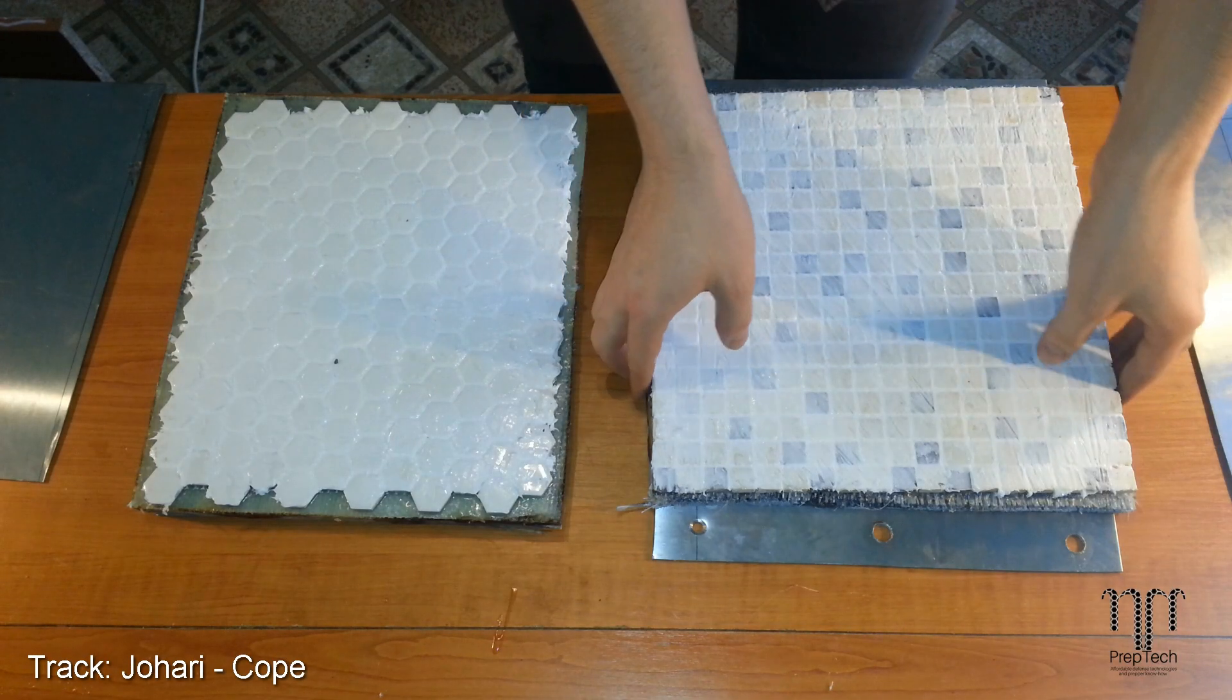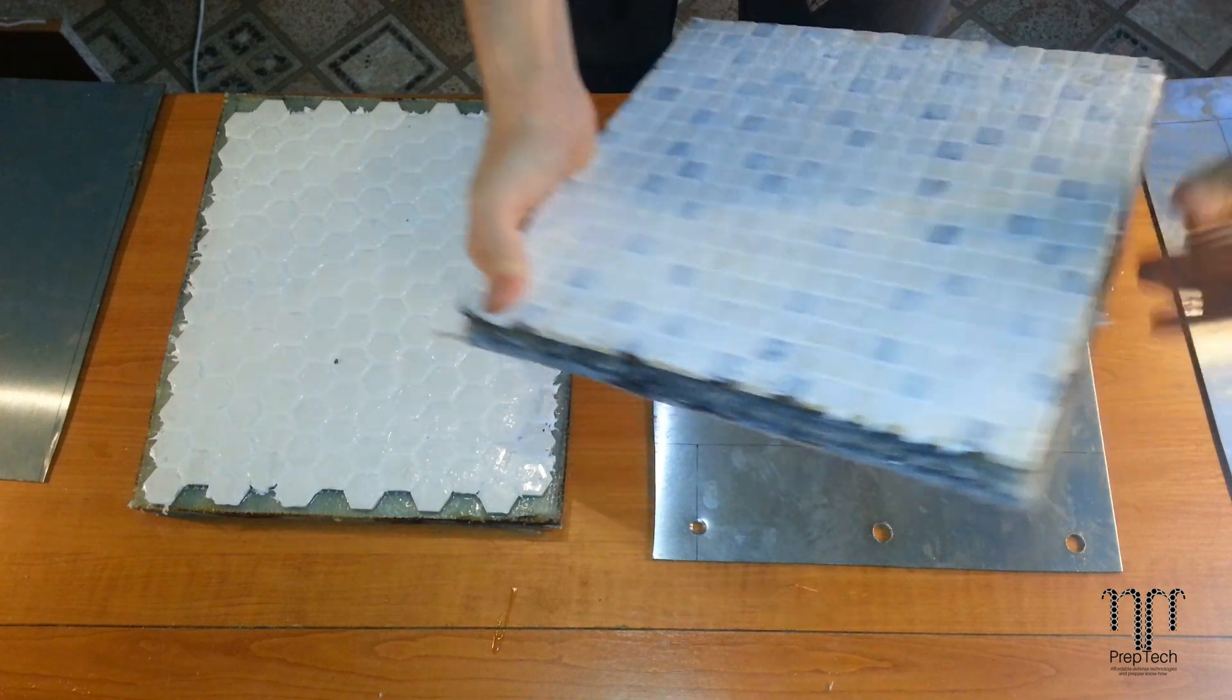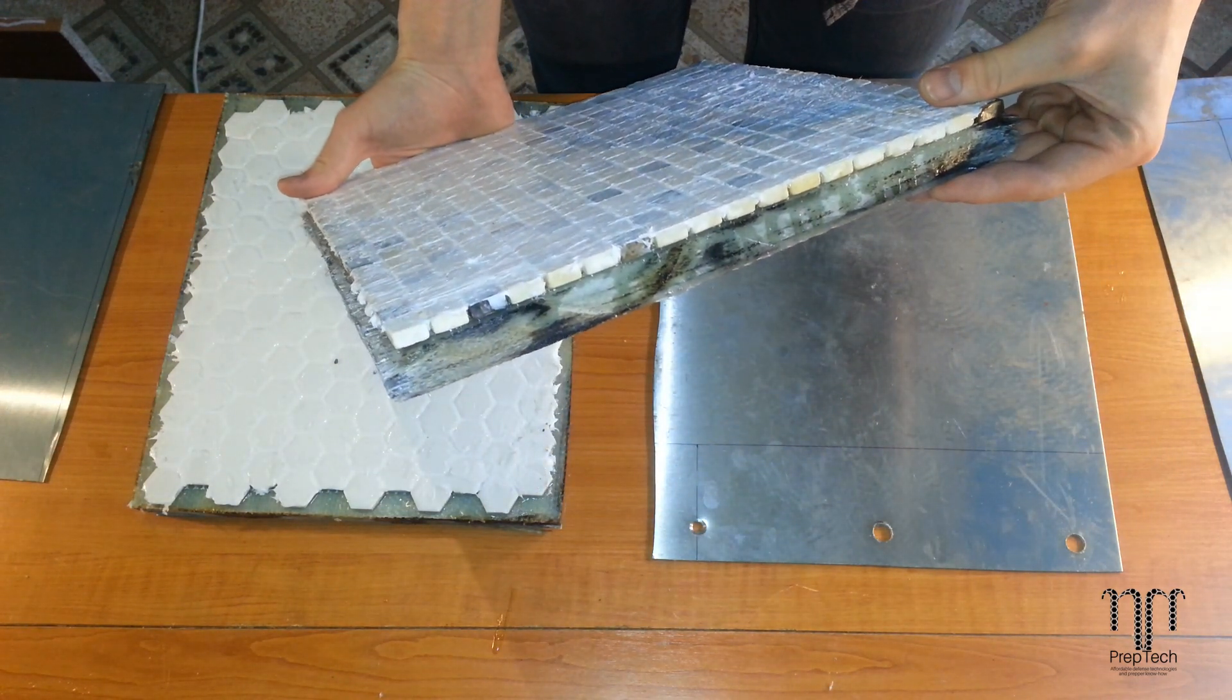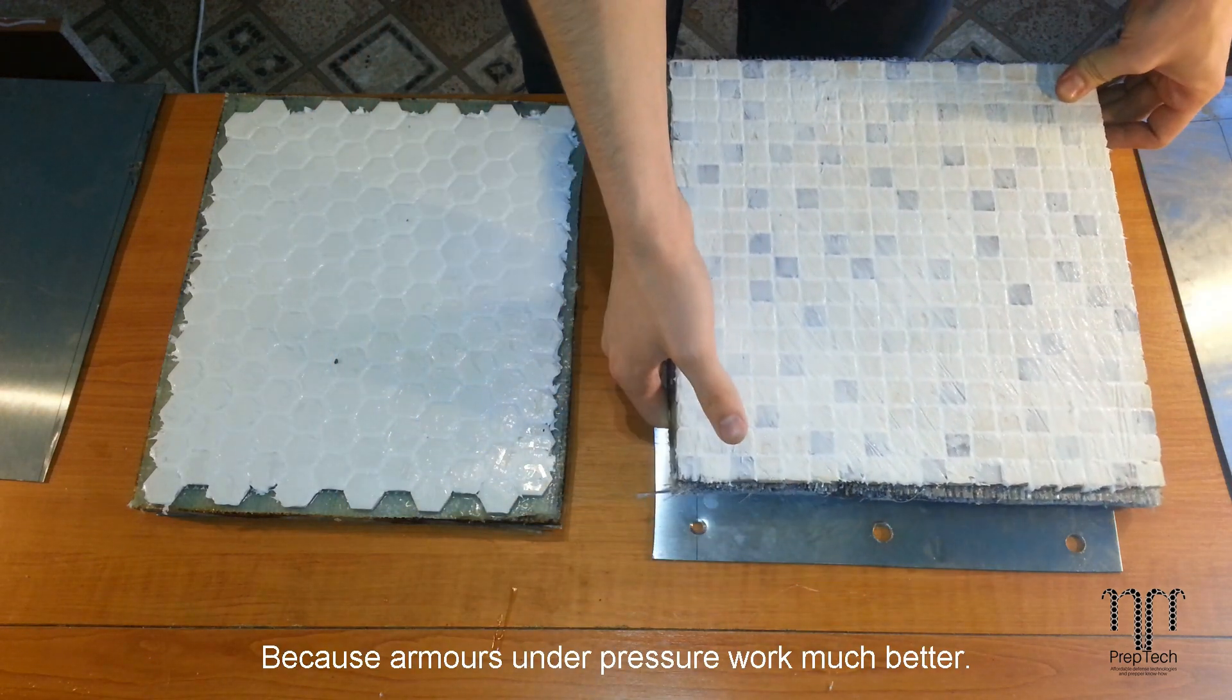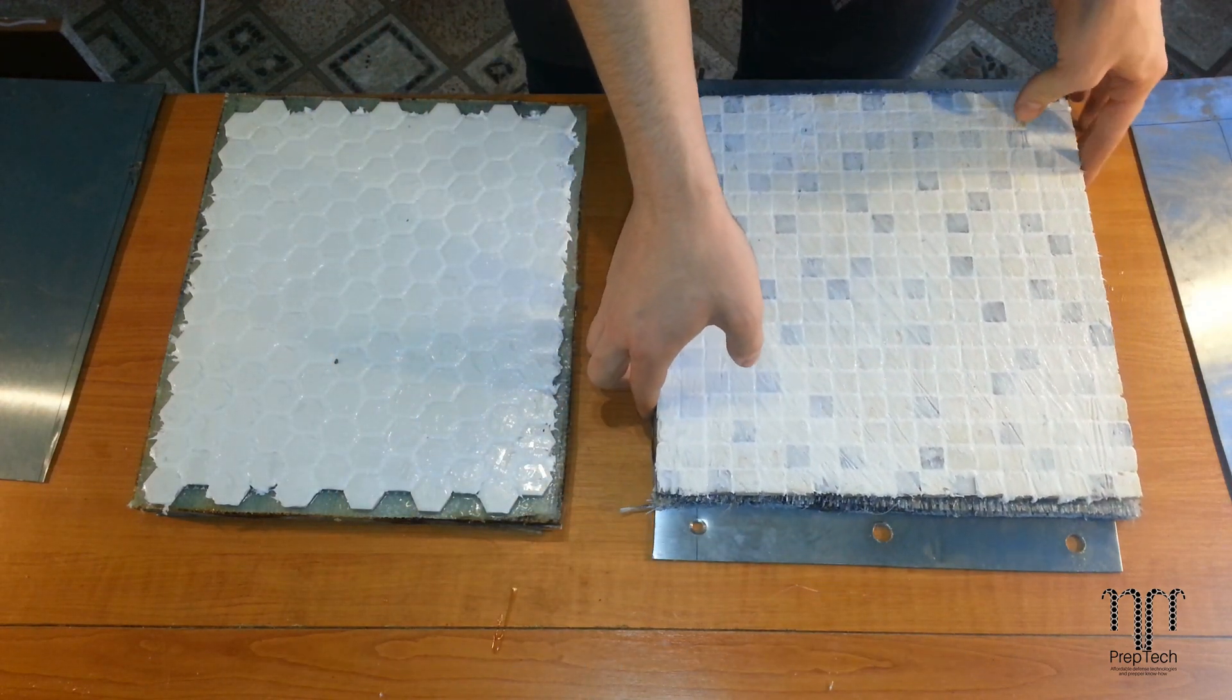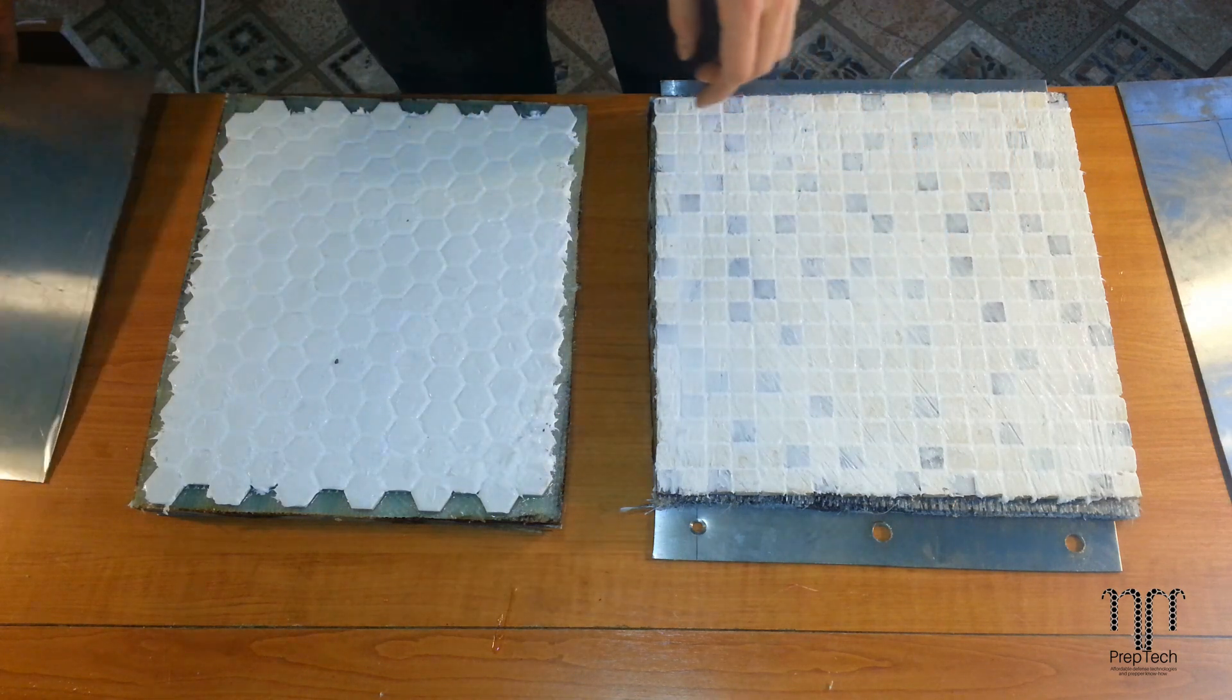Now that I had everything ready, I could finally put together the whole thing. In the meantime, the marble grid hardened nicely as well. Normally, the metal plates should be welded together, but since we want to see inside and examine the damage each bullet does, I choose other methods.